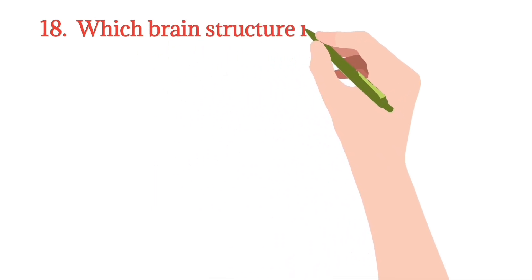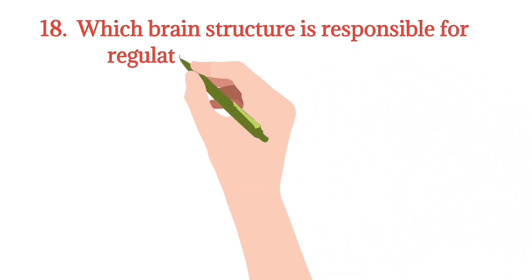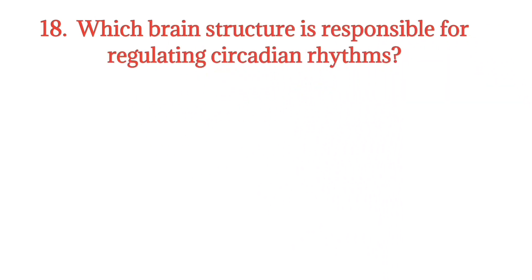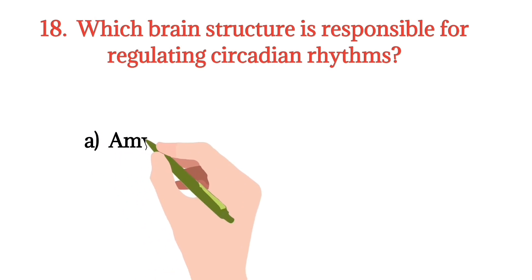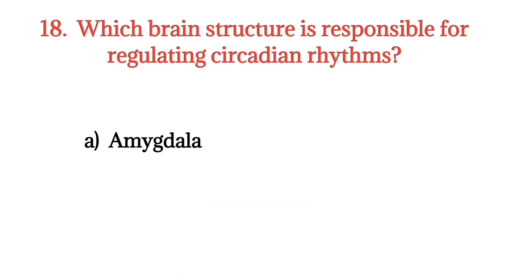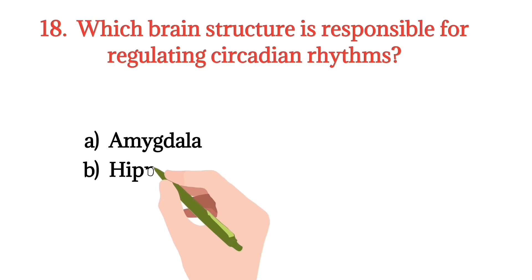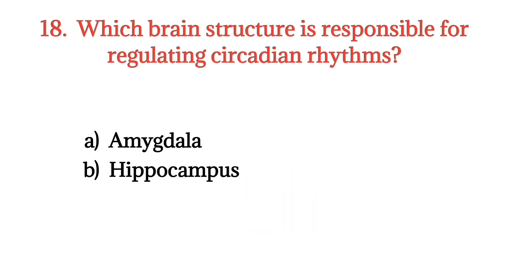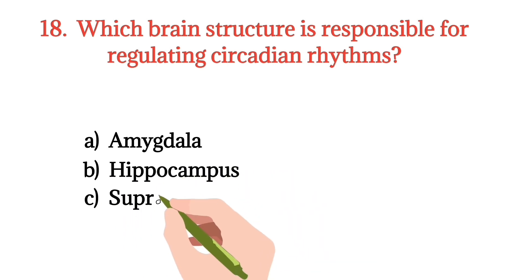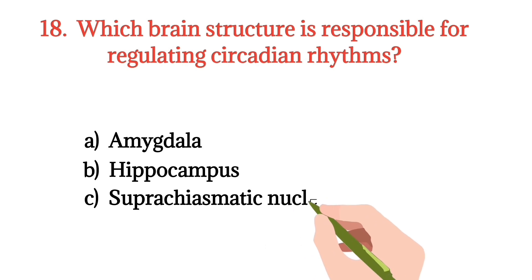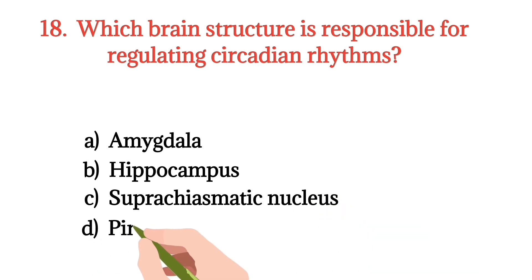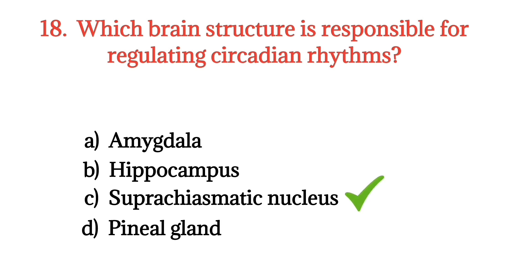MCQ number 18. Which brain structure is responsible for regulating circadian rhythm? Option A: Amygdala. Option B: Hippocampus. Option C: Suprachiasmatic nucleus. Option D: Pineal gland. The right option is Option C.